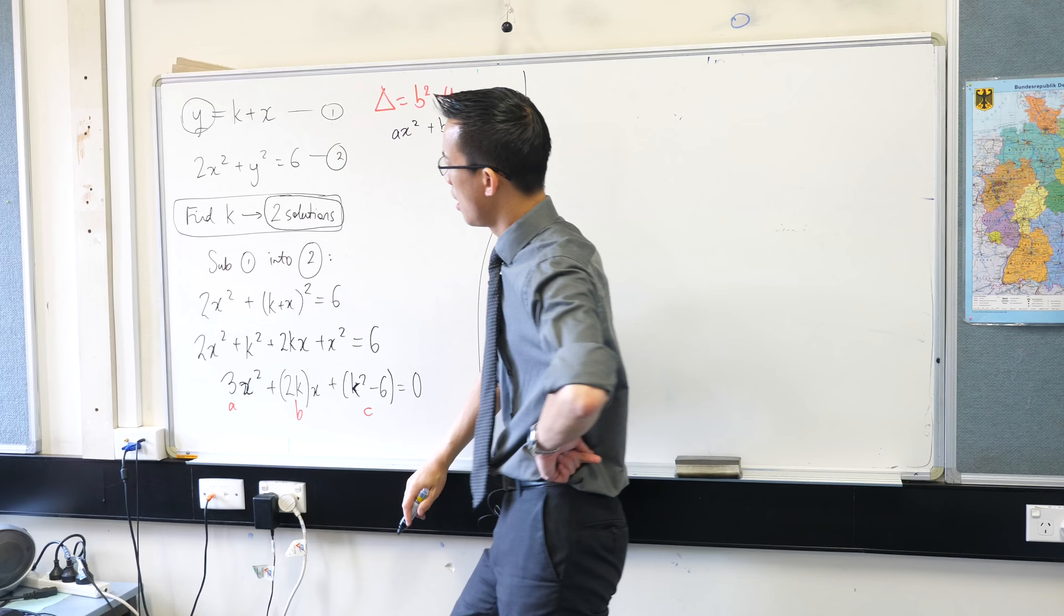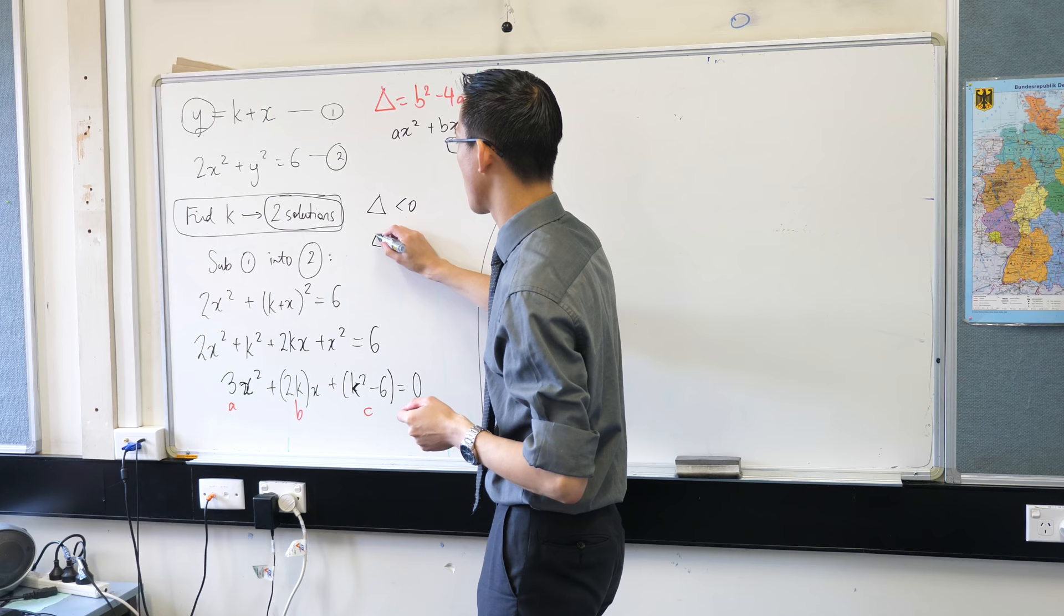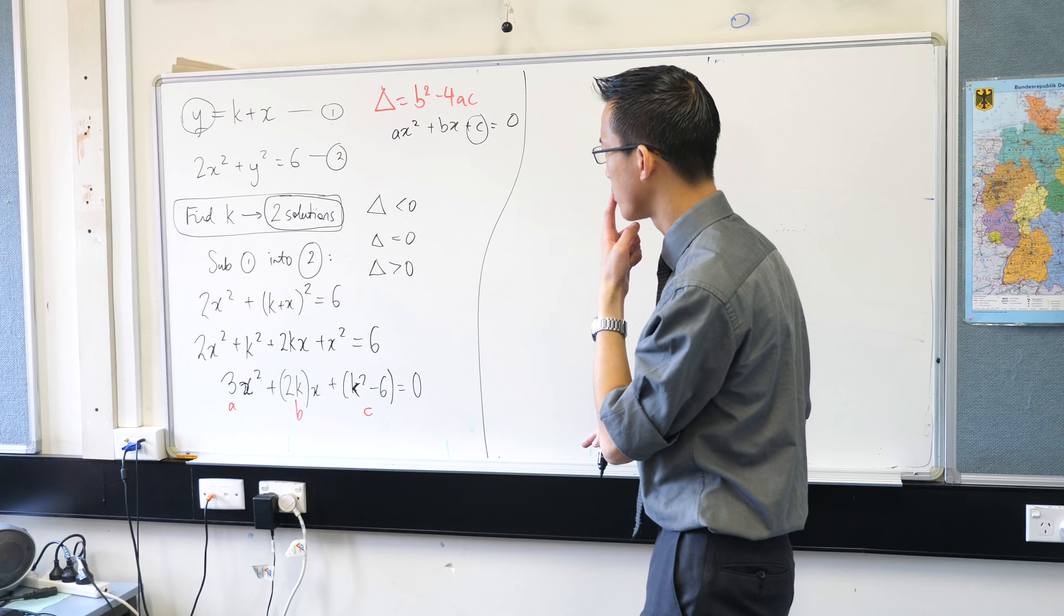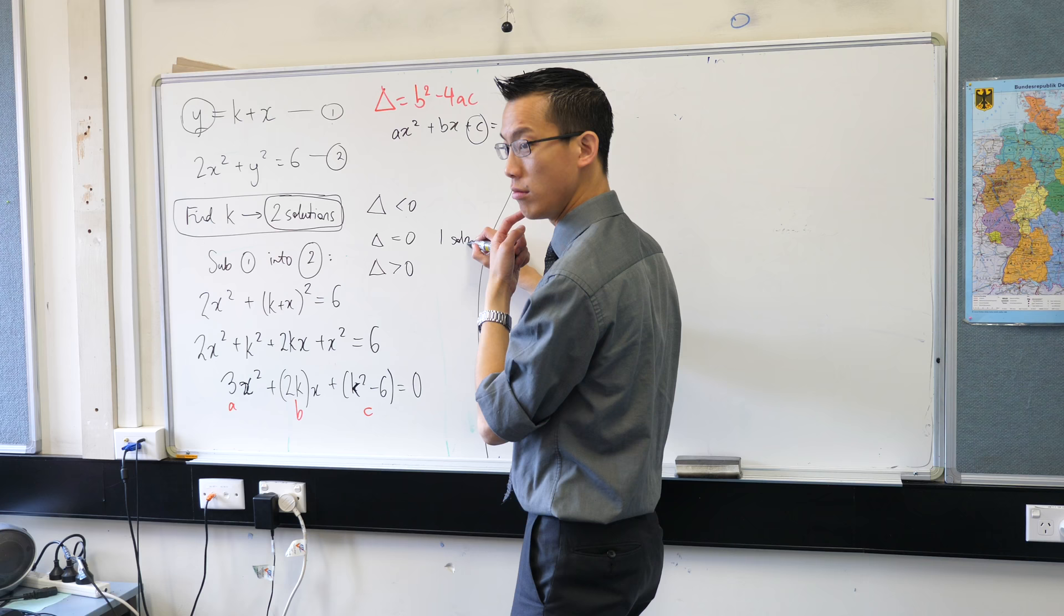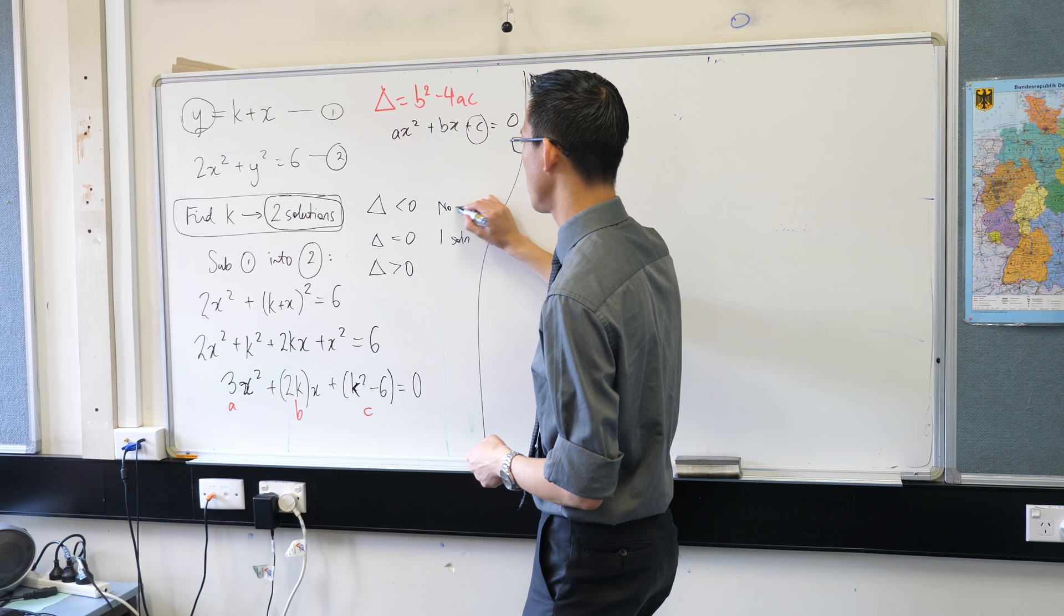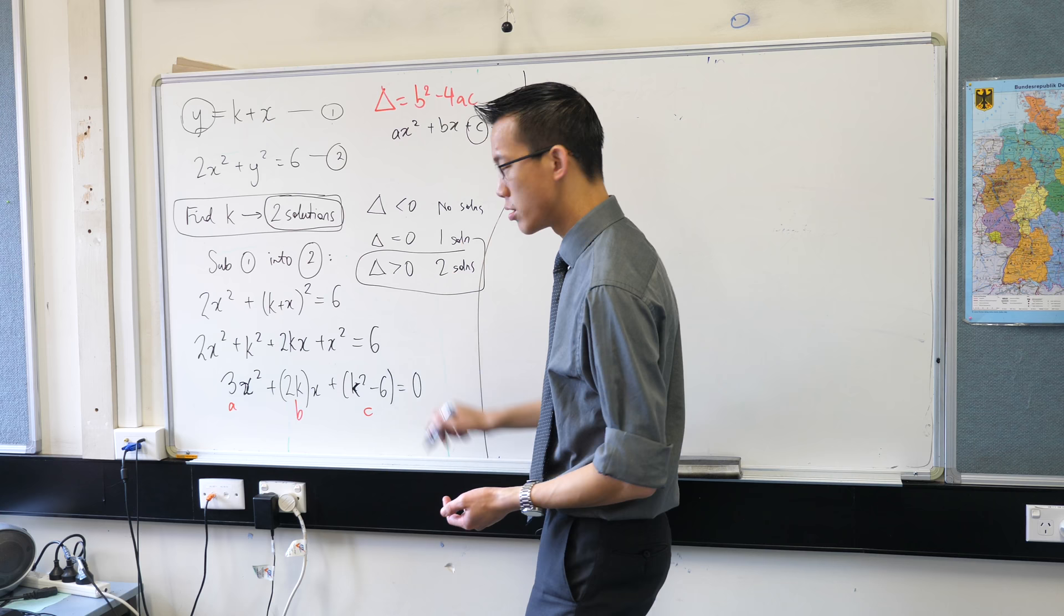but I now need to look at the question to say what do I want the discriminant to be? So if the discriminant, the discriminant can be one of three things, it can be less than 0, it can be equal to 0, or it can be greater than 0. So that's one solution when it just touches. This is when the thing underneath the square root is negative, so you get no solutions, and so this is the one we actually want.